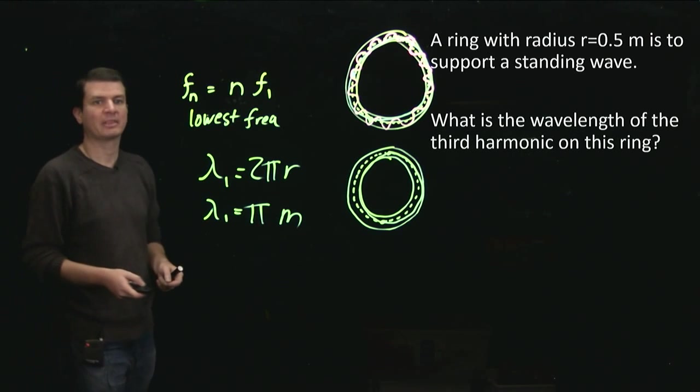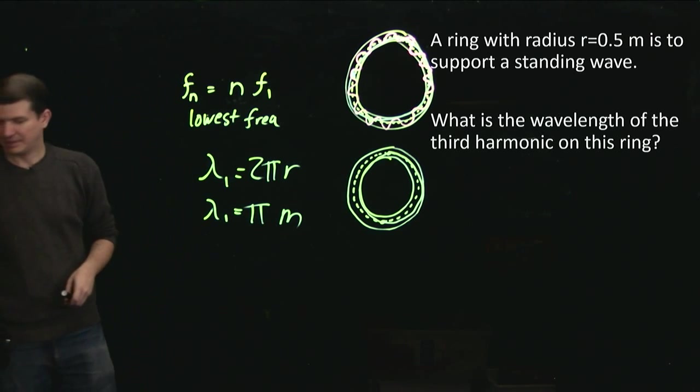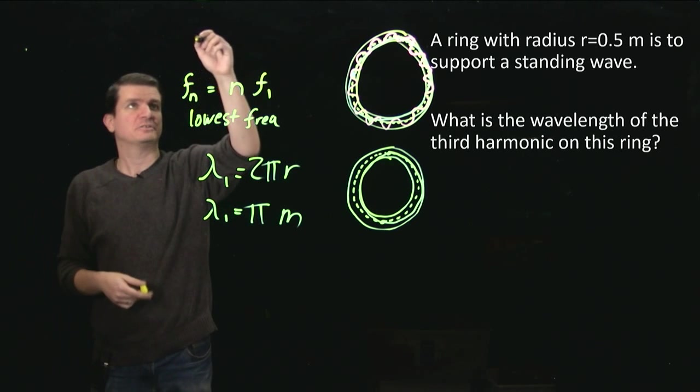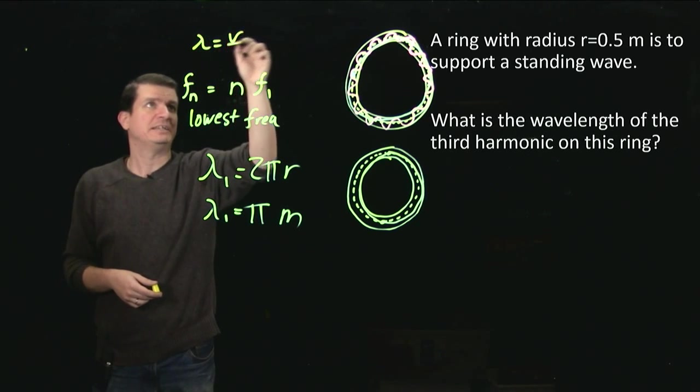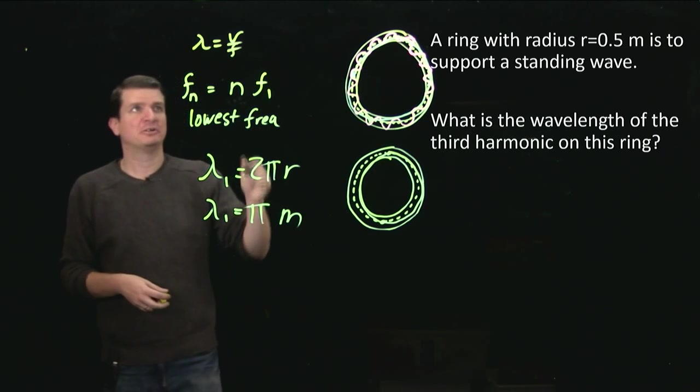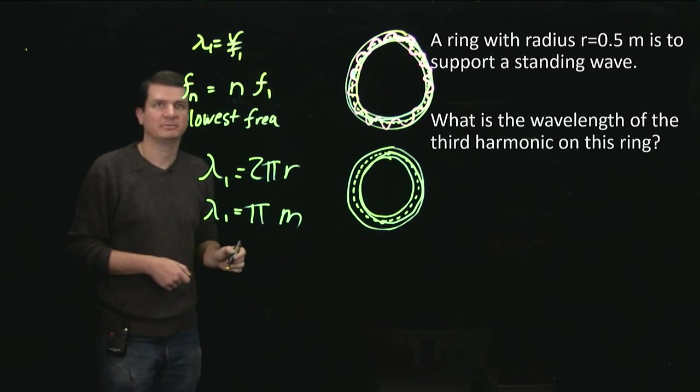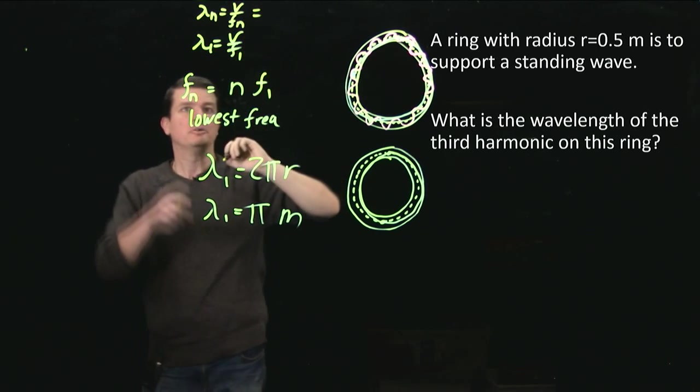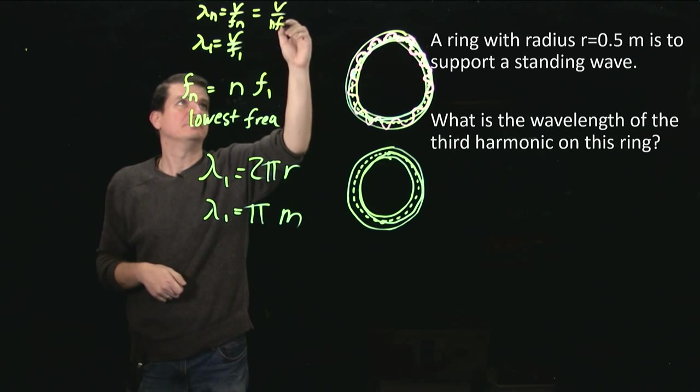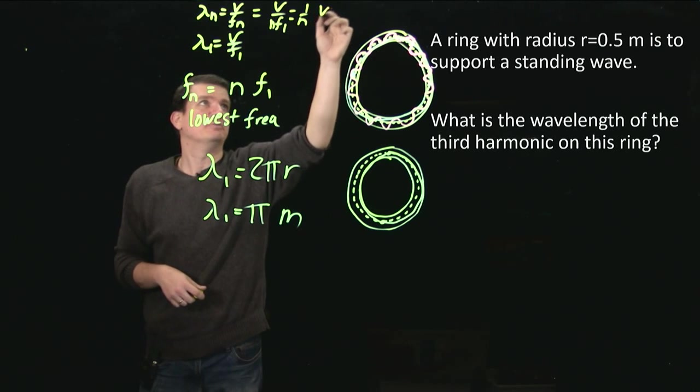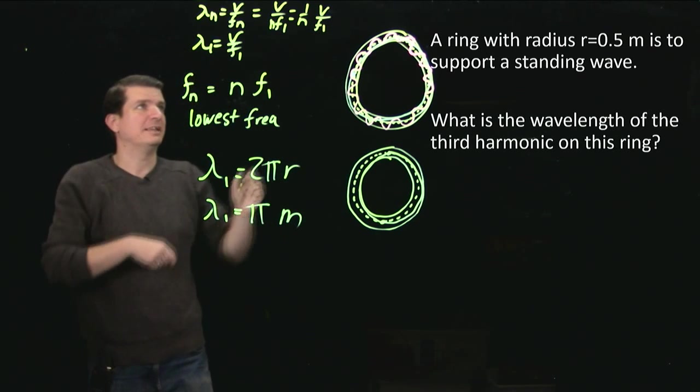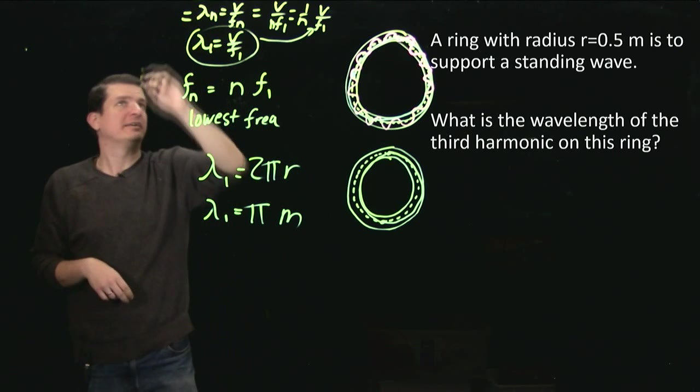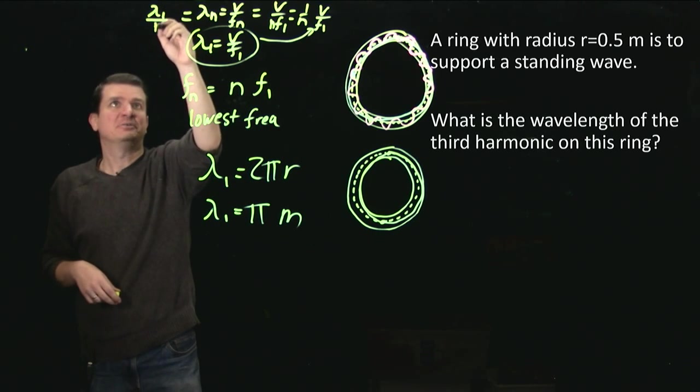So now let's keep on moving with this. So then we want to know what the wavelength of the third harmonic is. Now again, we've got a defining equation in terms of frequency. We knew that lambda was equal to v on f. So if we want to know what lambda n is in terms of lambda 1, well, lambda n is v on fn. fn is n times f1. So that's 1 on n times v on f1, which is lambda 1. And so we know that lambda n in the end is just lambda 1 divided by n.